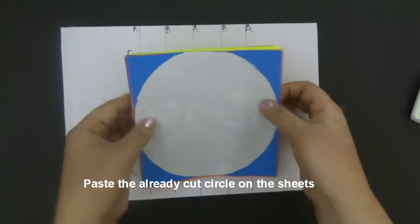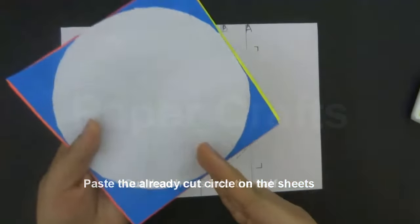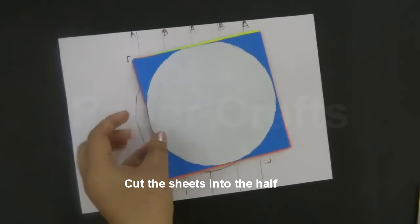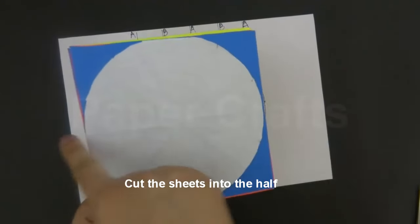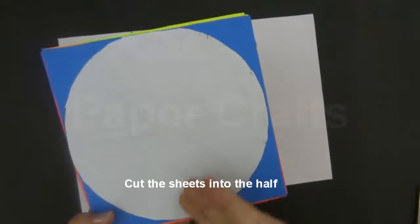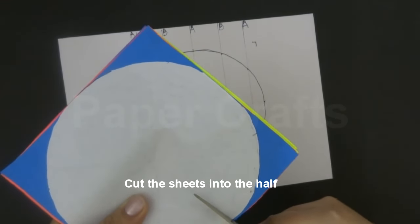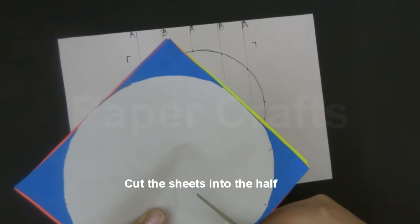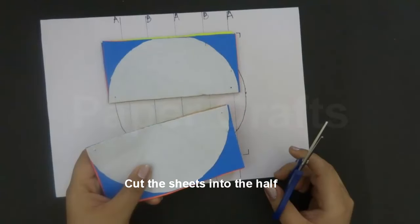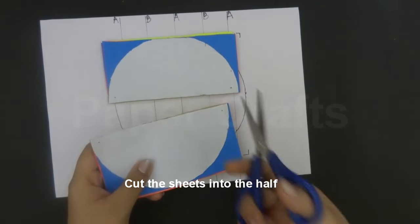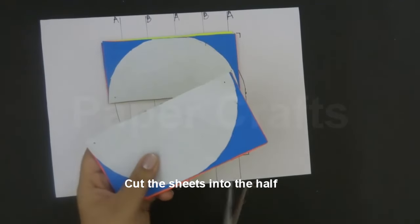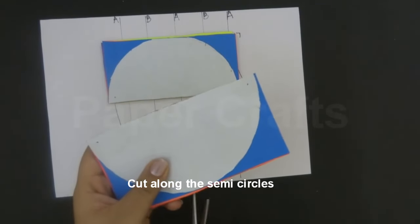Now cut the sheets into the half. While cutting along the half make sure that you should cut along this half not this half. Once we have cut the sheets along the half we will now cut them along the semicircles.